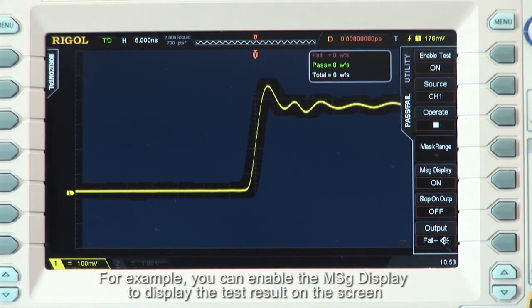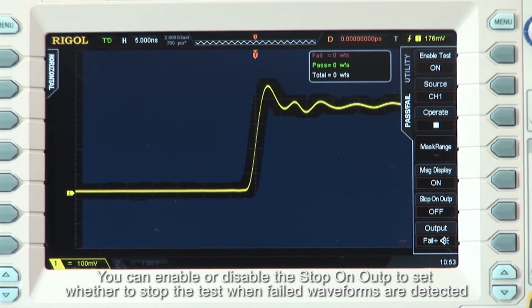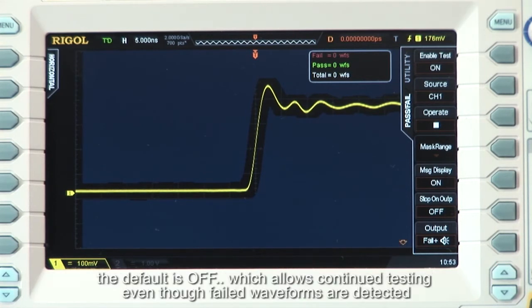For example, you can enable the message display to show the full test results on the screen. You can enable or disable the stop on output to set whether to stop the test when failed waveforms are detected. The default is off, which allows you to continue testing even when failed waveforms are detected.